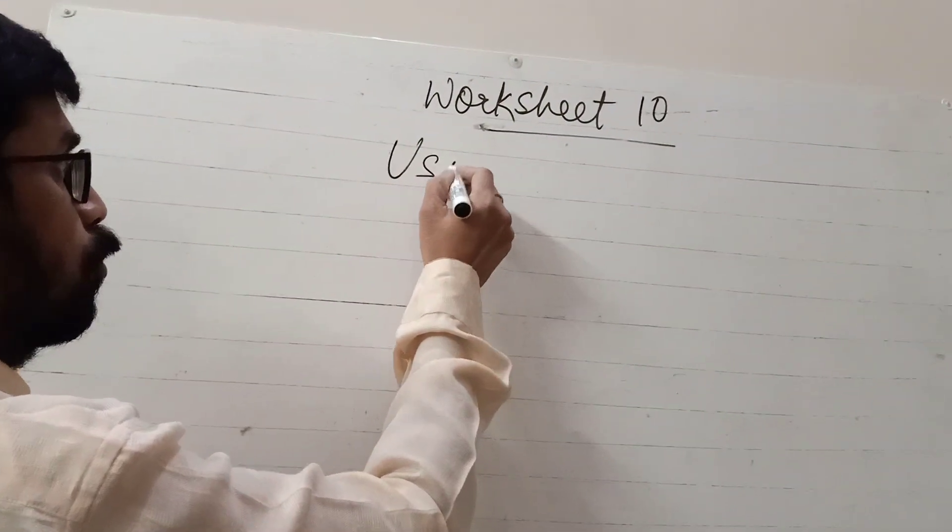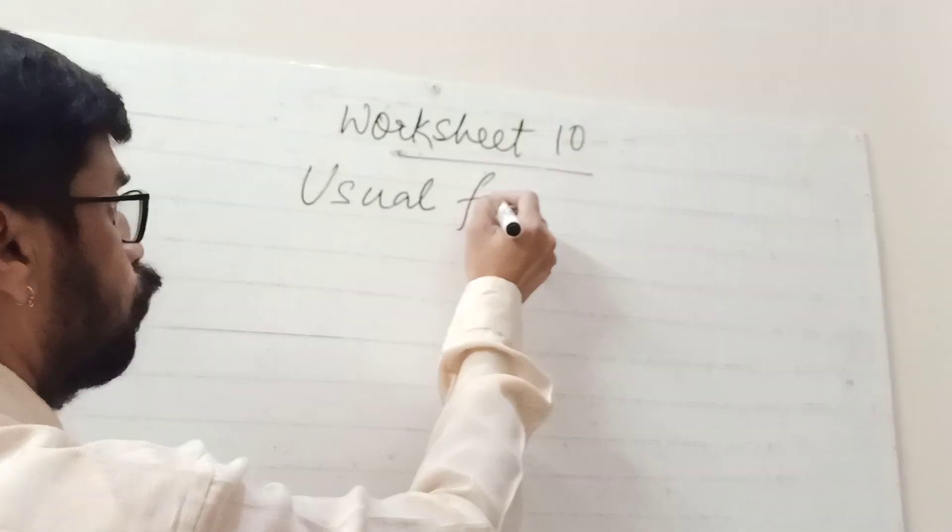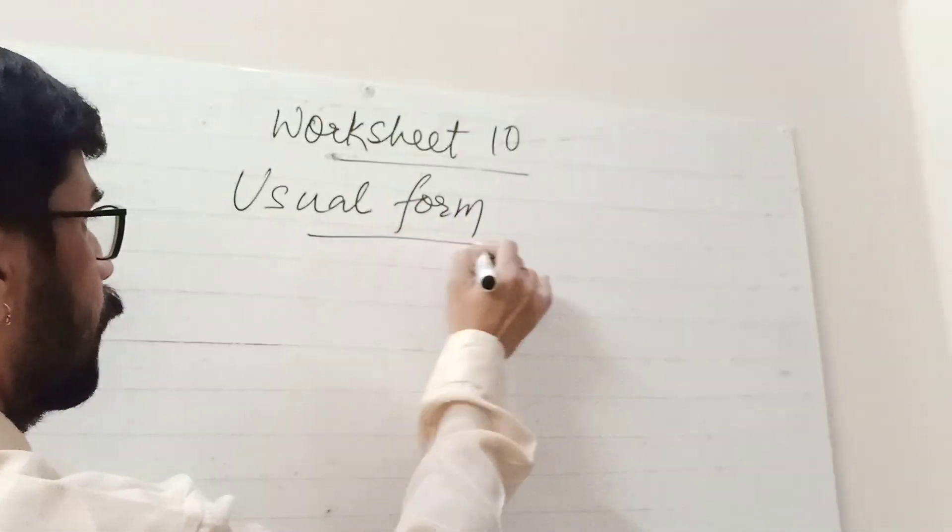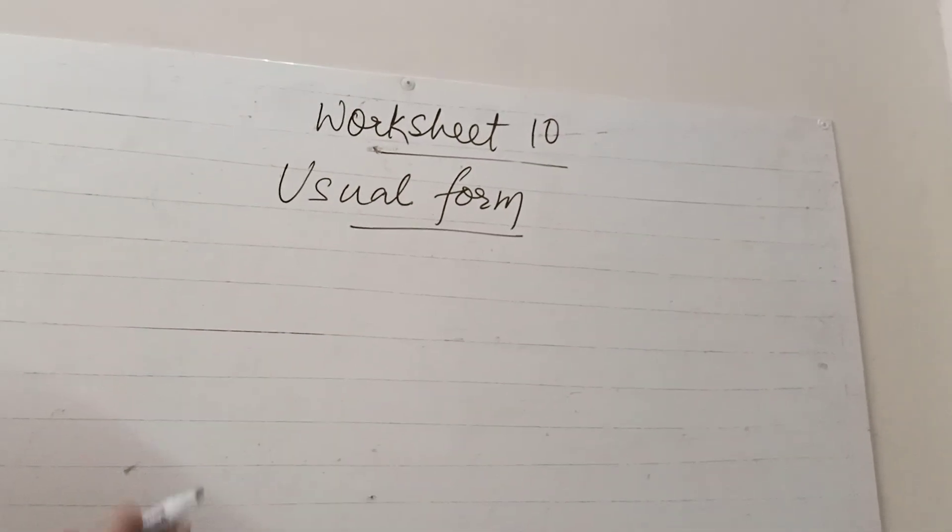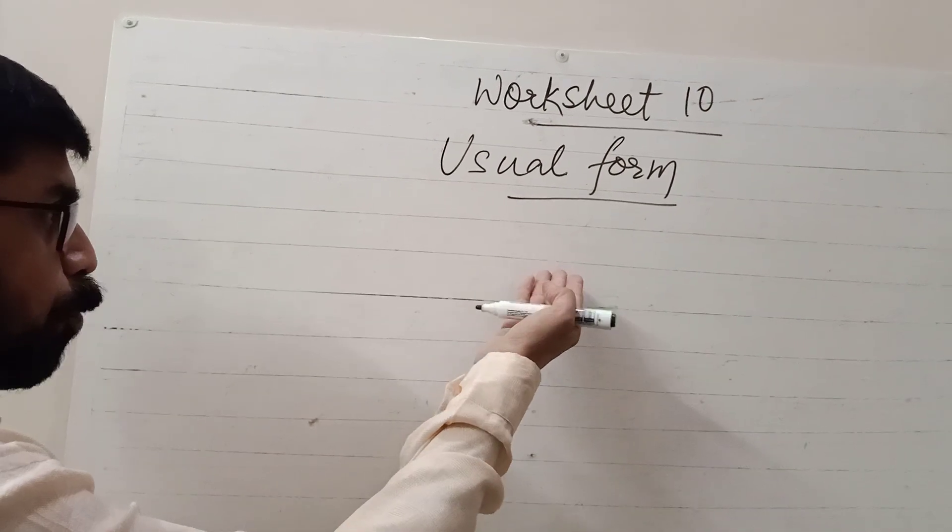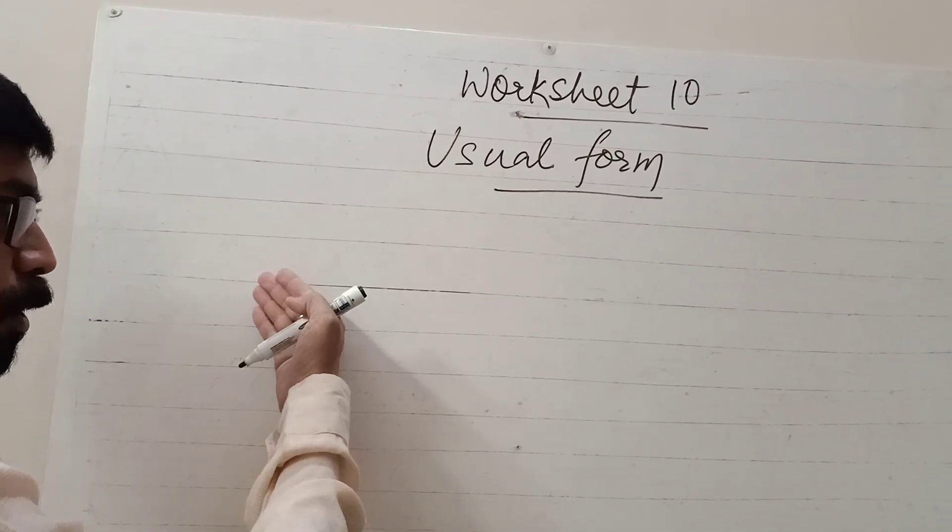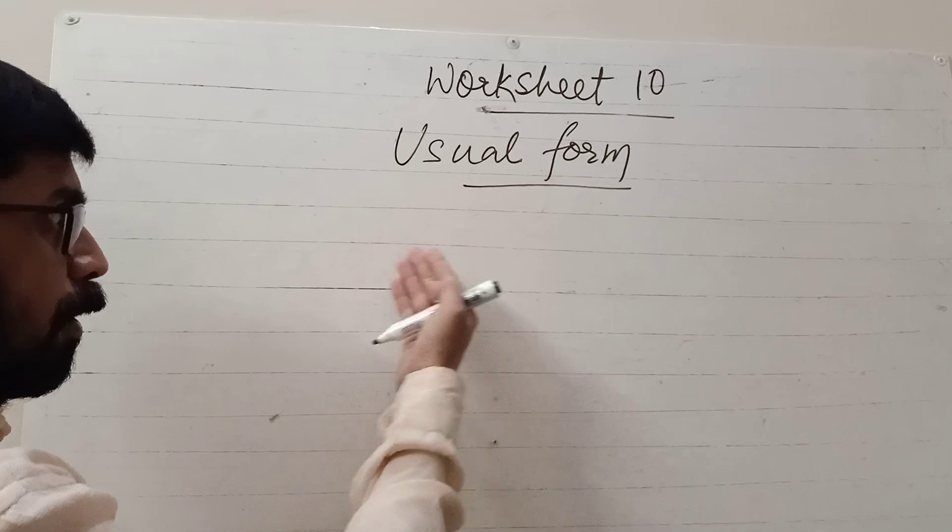Next, we need to convert it into usual form. To convert into usual form is just the opposite of standard form. If the decimal moves from right to left, the power becomes negative. From left to right, the power becomes positive.